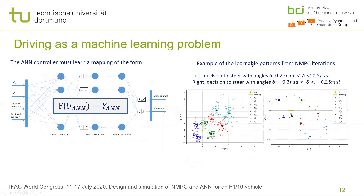Now let's talk about implementing driving as a machine learning problem. The ANN controller has to learn from the NMPC controller by learning a mapping between the inputs and outputs. Because we are always using a standard transformation of all the points, it is sufficient to provide the velocities and the left and right track boundary points to the ANN controller. The outputs are the steering angle and the duty cycle.